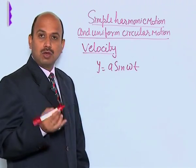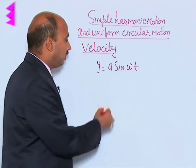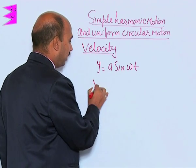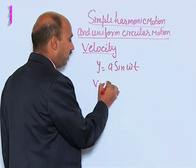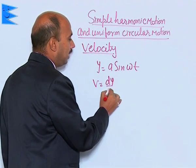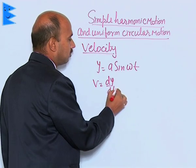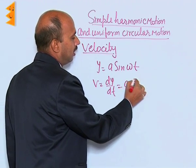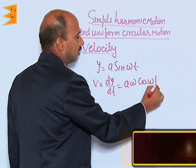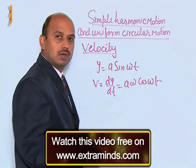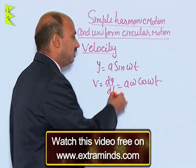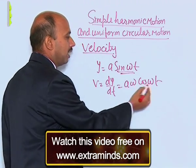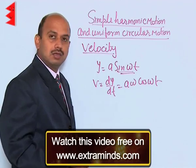If you want to get velocity, you have to differentiate it with respect to time. So we can write V is equal to dy upon dt, which is equal to a omega cos omega t. Differentiation of sin omega t with respect to time gives omega cos omega t.